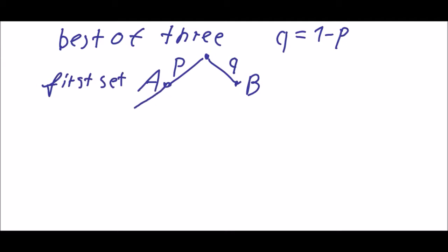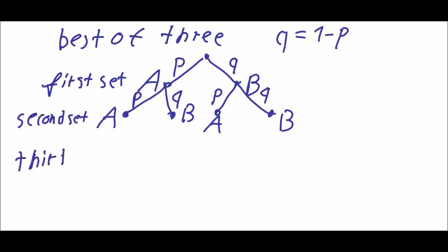The second set is A wins with probability p, B with probability q, A with p, B with q. So this is the second set. And in the third set, in the case that A has won the first 2 sets, it's not necessary to do anything. So it's just 1.